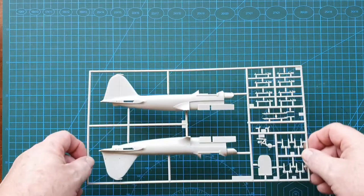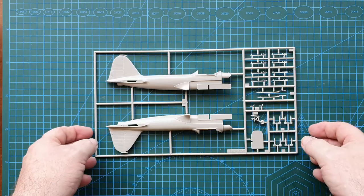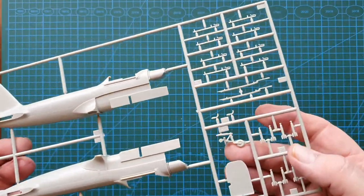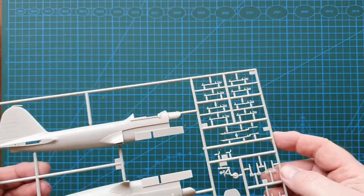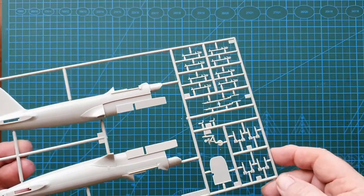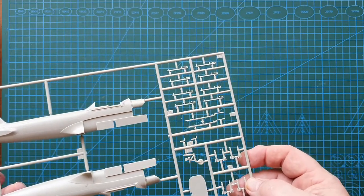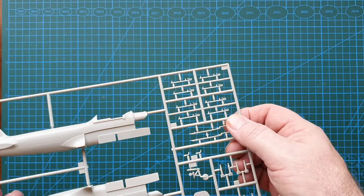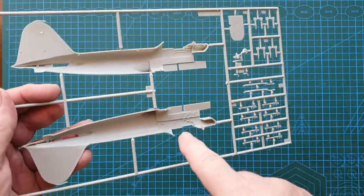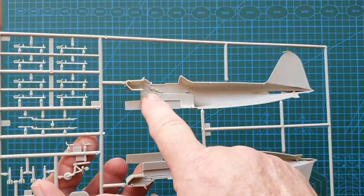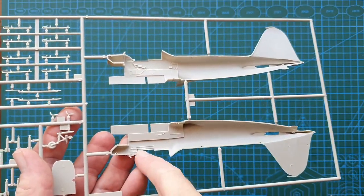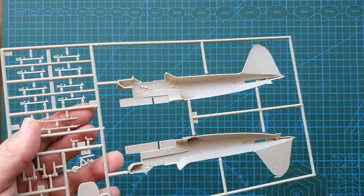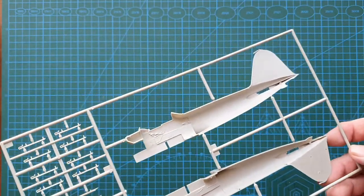First sprue we'll look at is fuselage. It looks really nice—recessed panel lines, very nice detail. Tail wheel which you won't use because it's a ski version, but you can always put the tail wheel and main wheels on and forget about skis. These look like rocket rails. Let's have a look inside—really nice detail, cockpit detail. A lot of manufacturers don't put that in, but it always helps. Good crisp, not much in the way of flash.